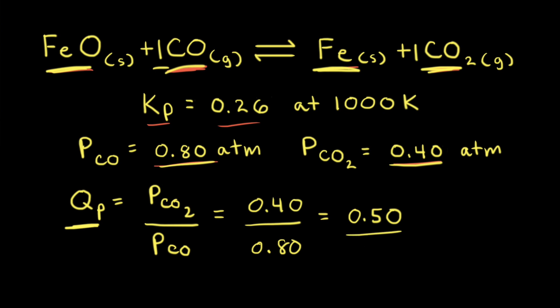Since Qp is not equal to Kp at this moment in time, the reaction is not at equilibrium. Qp is equal to 0.50 and Kp is equal to 0.26, so Qp is greater than Kp. When Qp is greater than Kp, there are too many products and not enough reactants. Therefore, the net reaction is going to move to the left.